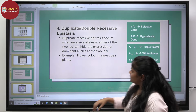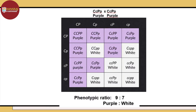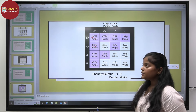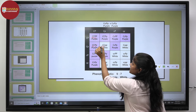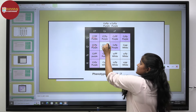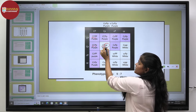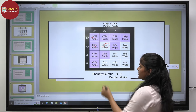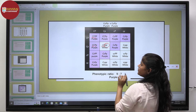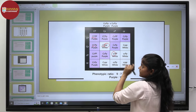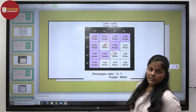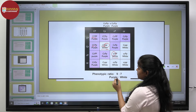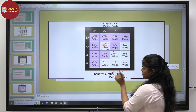In the Punnett square, wherever both dominant genes are present, a purple phenotype is shown. The presence of only one dominant gene is masked by the recessive genes of the other locus — both in the case of the P gene being recessive and the C gene being recessive — so only a white phenotype is expressed, leading to a deviated ratio of 9:7.